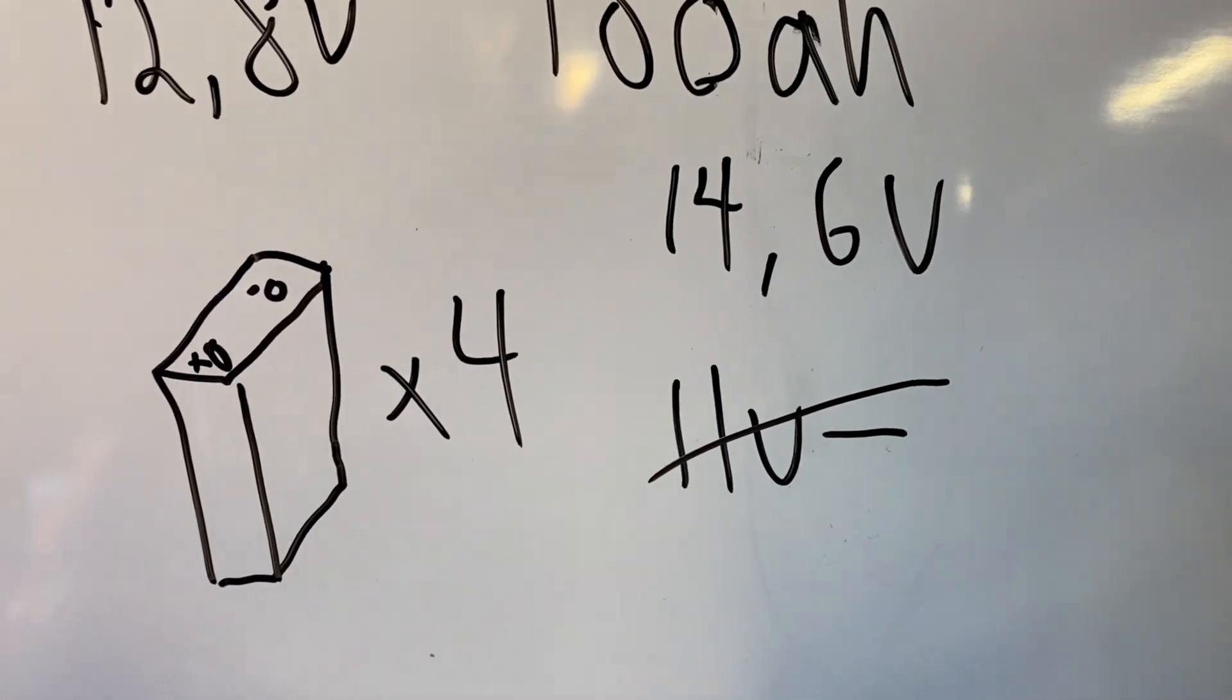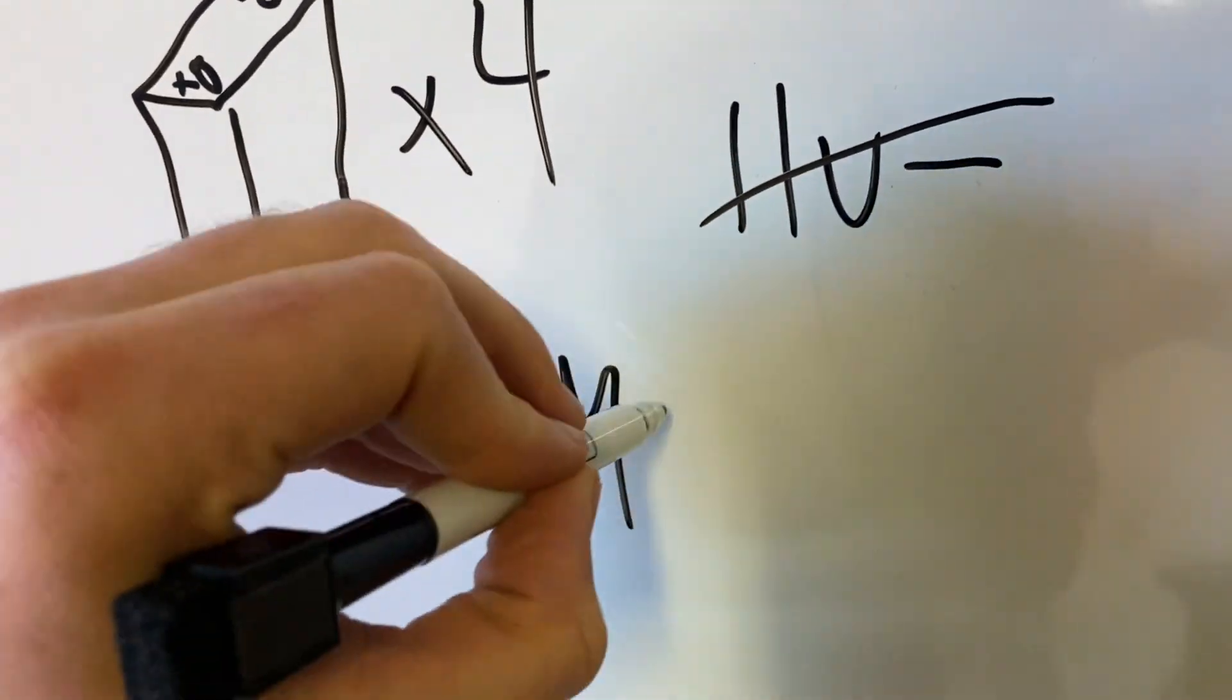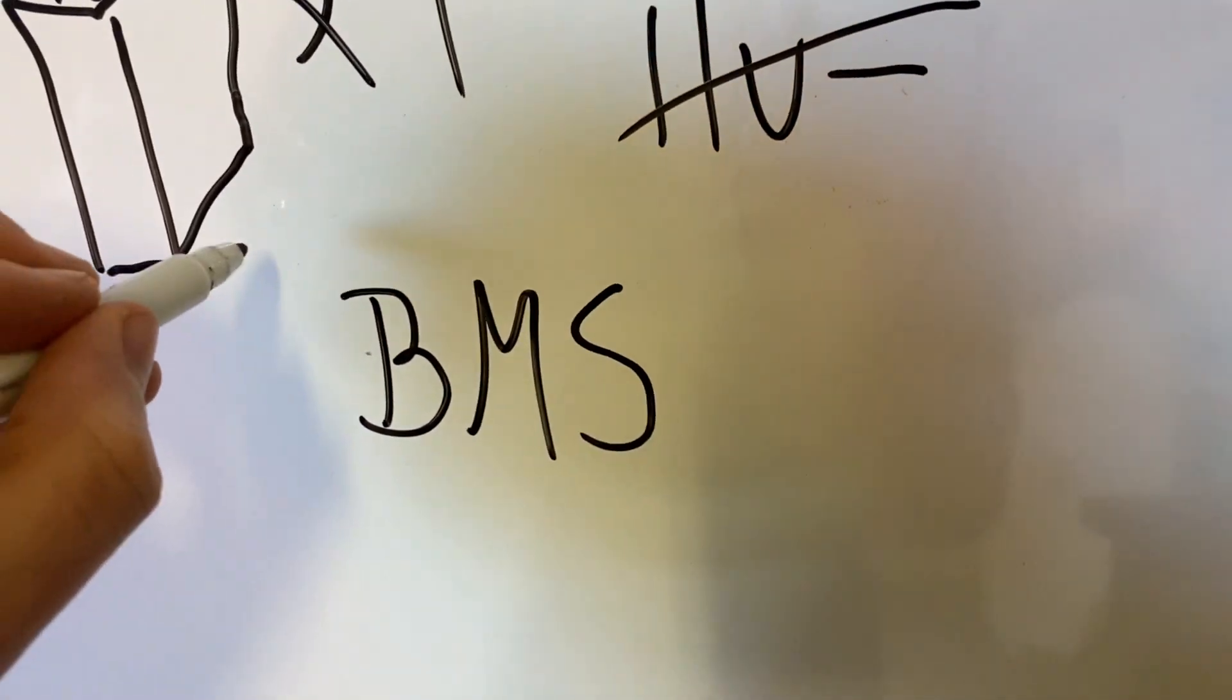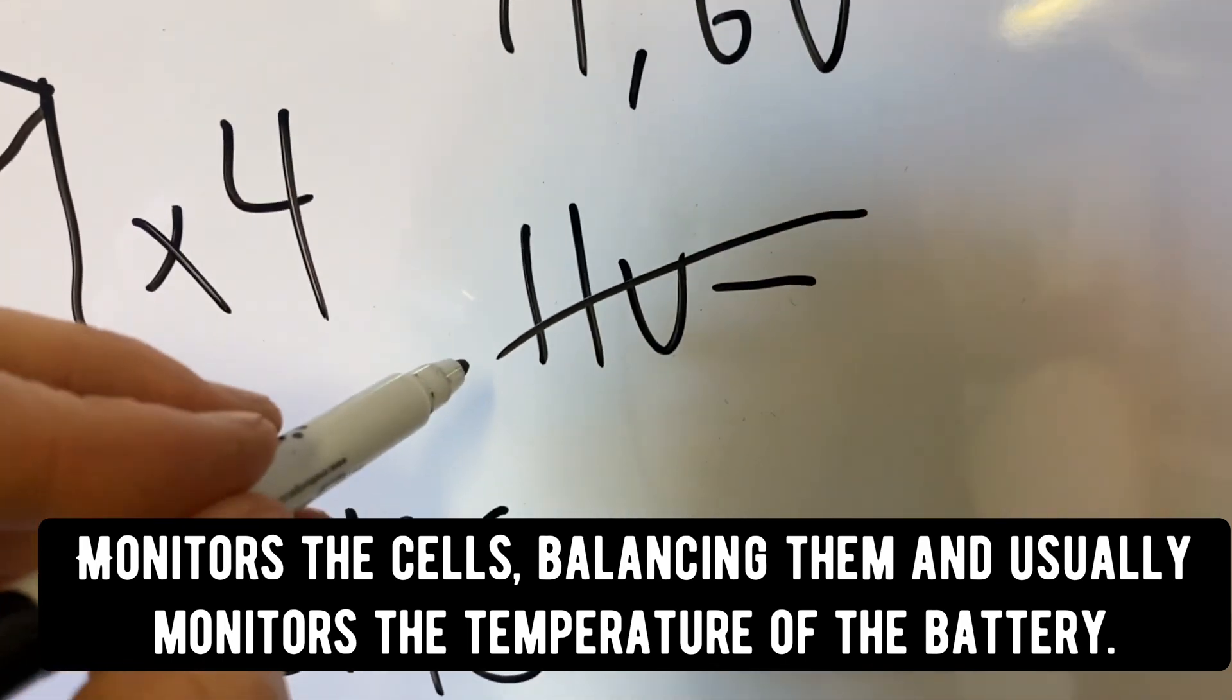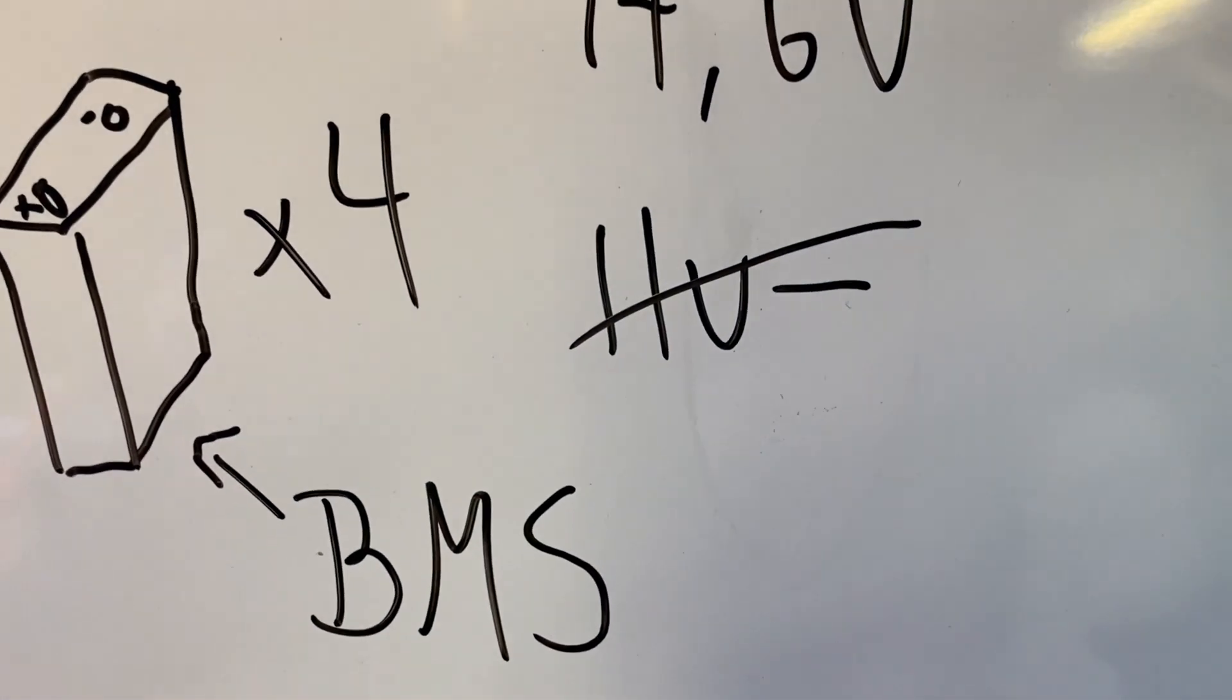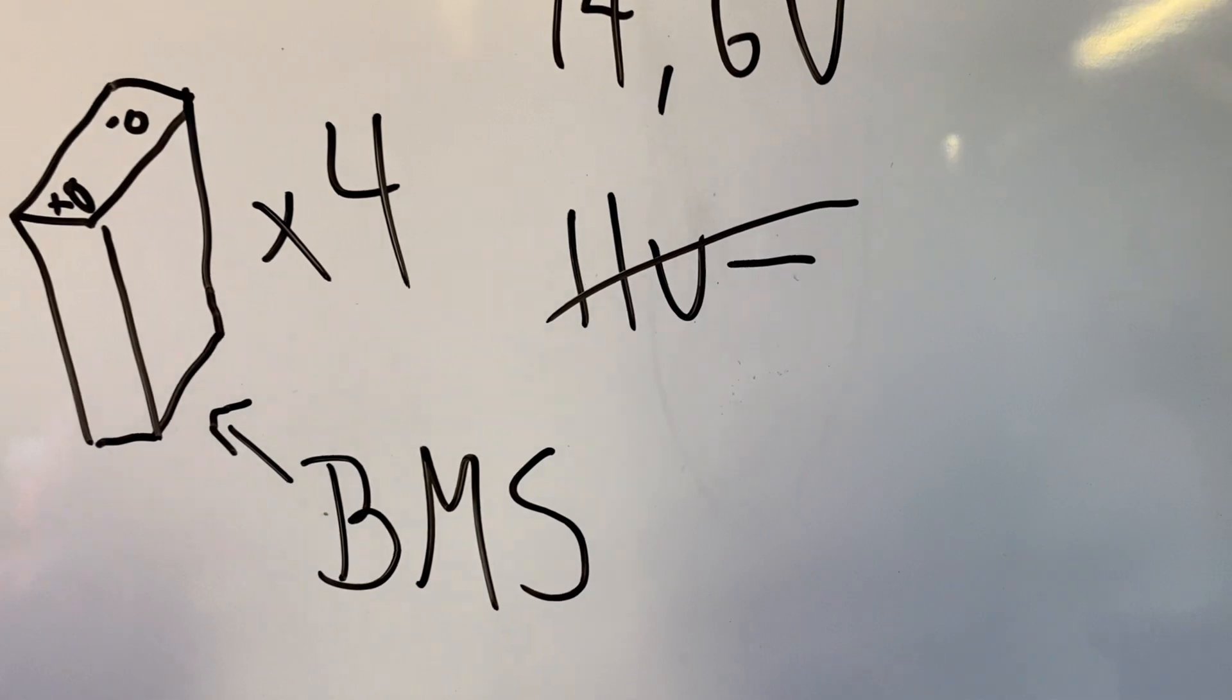Now inside the battery there is something called a BMS that protects the cells from overcharging or over-discharging. Usually it cuts the discharge at about 10.9, 10.8 volts.